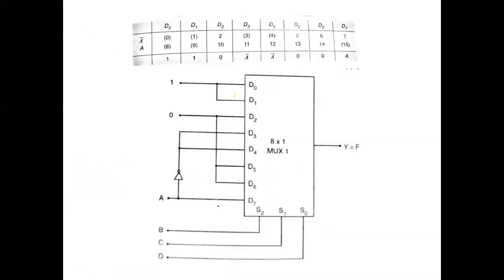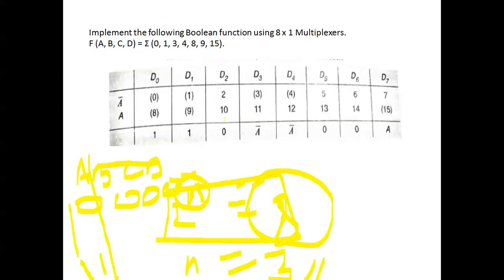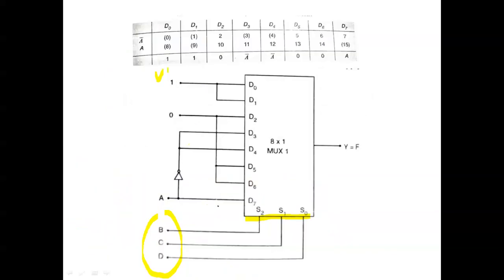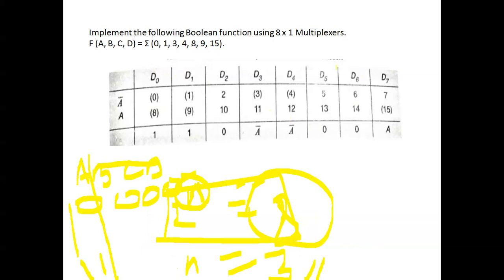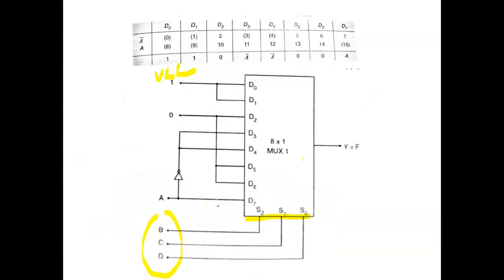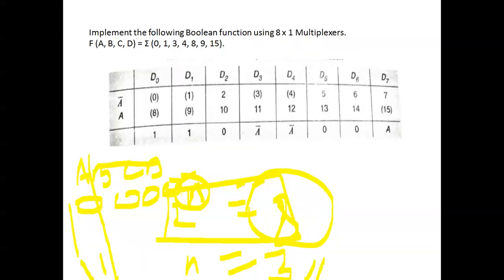For the final implementation, draw the 8-to-1 MUX with D0 to D7 and output Y. The D0 value is 1, so connect it to VCC power supply. Where the value is A-bar, connect A-bar to that data input. Where the value is A, connect A directly. Remaining inputs are grounded. Select lines S0, S1, S2 are connected to B, C, D respectively.